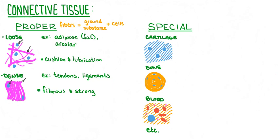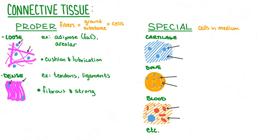Special connective tissue consists of living cells suspended in a non-living medium. Examples include cartilage, bone, and blood, all of which possess specialized cells suspended in some sort of non-living medium that may or may not possess fibers.